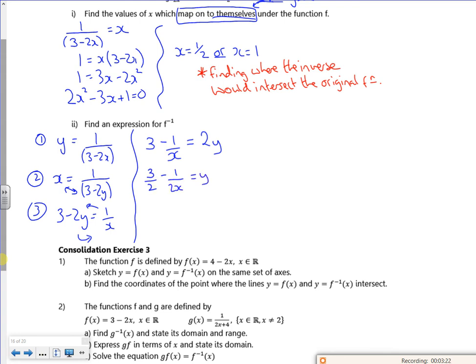Now I can leave it like that if I want to. But if I make 2x a common denominator, I just need to make it 3x over 2x. So I've got 3x minus 1 over 2x is y. So that means that my inverse is f to the minus 1 of x is 3x minus 1 over 2x.